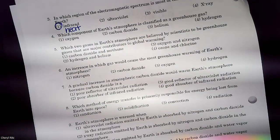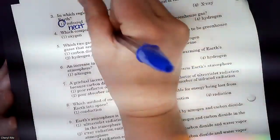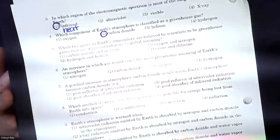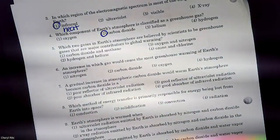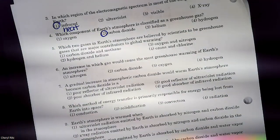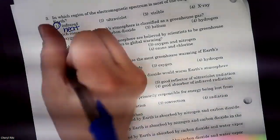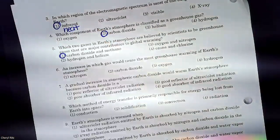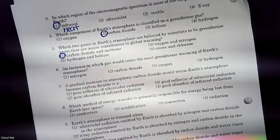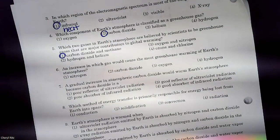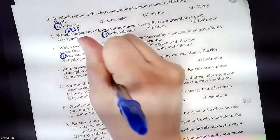Which one of these, guys, is the greenhouse gas? Yep. You just have to memorize. Carbon dioxide, methane, and water vapor are the greenhouse gases. So speaking of which one of these are the greenhouse gases, answer one, carbon dioxide, methane, and water vapor. An increase in which gas would cause the most greenhouse warming of Earth's atmosphere? Again, carbon dioxide.